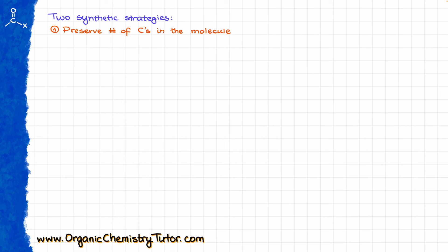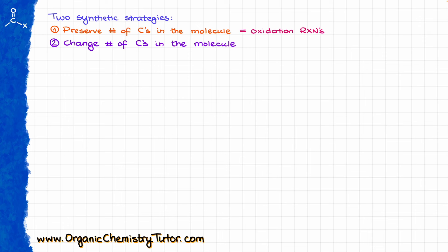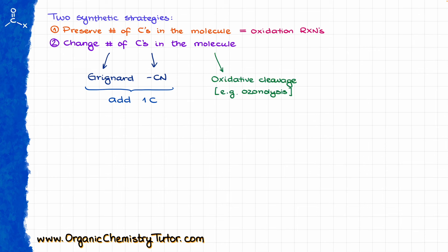The first strategy is going to preserve the number of carbons in your molecule, and those are going to be our various oxidation reactions. The second strategy is going to change the number of carbons in your molecule — either adding carbons, such as reactions involving the Grignard reagent and reactions involving nitriles, which are typically going to be adding one carbon to your chain. Or, we are also going to be looking at reactions involving oxidative cleavages, mainly ozonolysis, which can either cut one carbon from your chain if your double or triple bond is sitting at the end of your molecule, or potentially cut multiple atoms off your chain. Potentially, we are not even going to lose any atoms, but we'll look at those examples in a few moments.